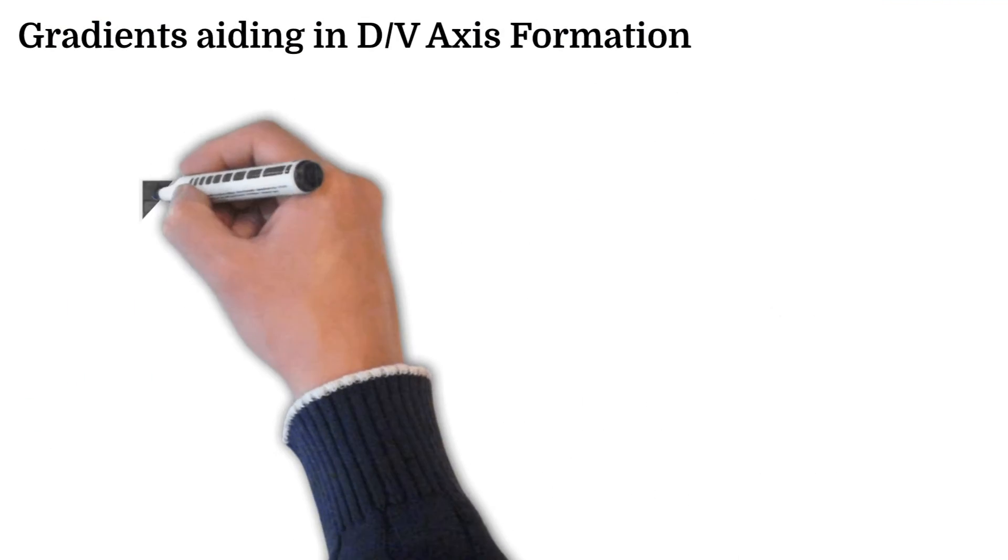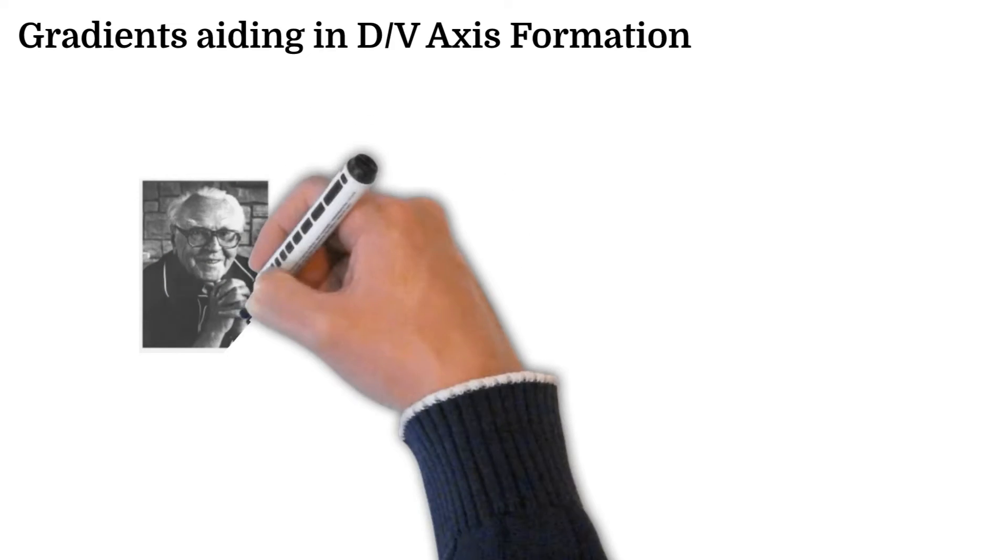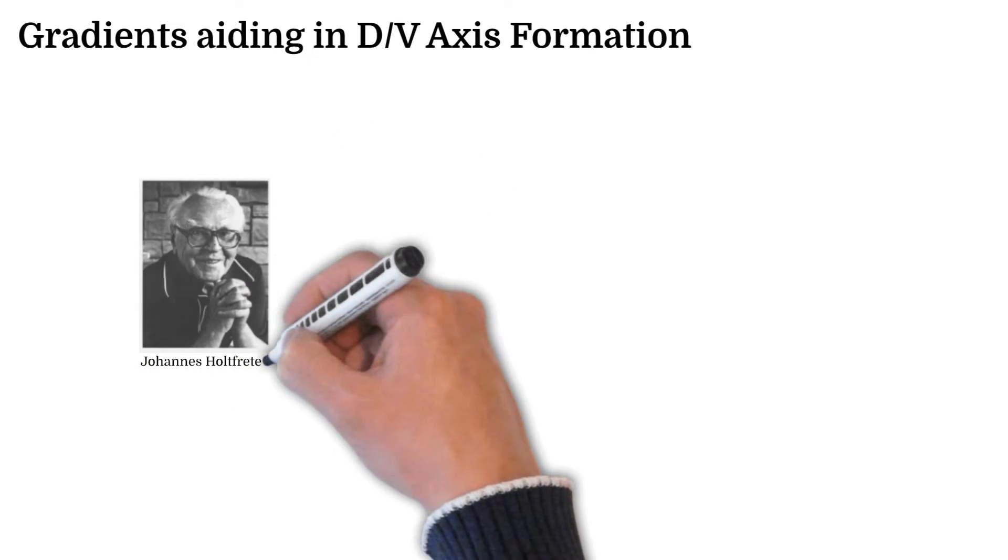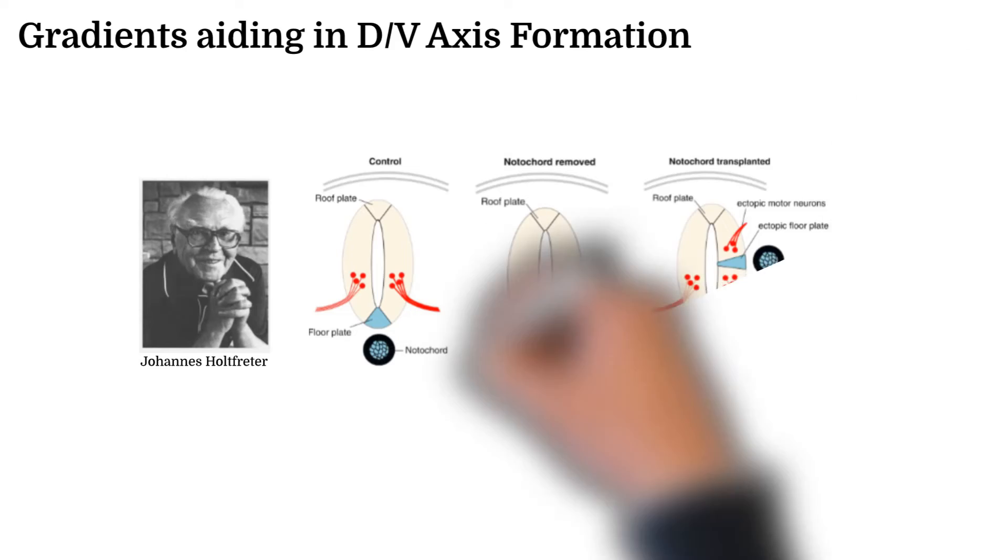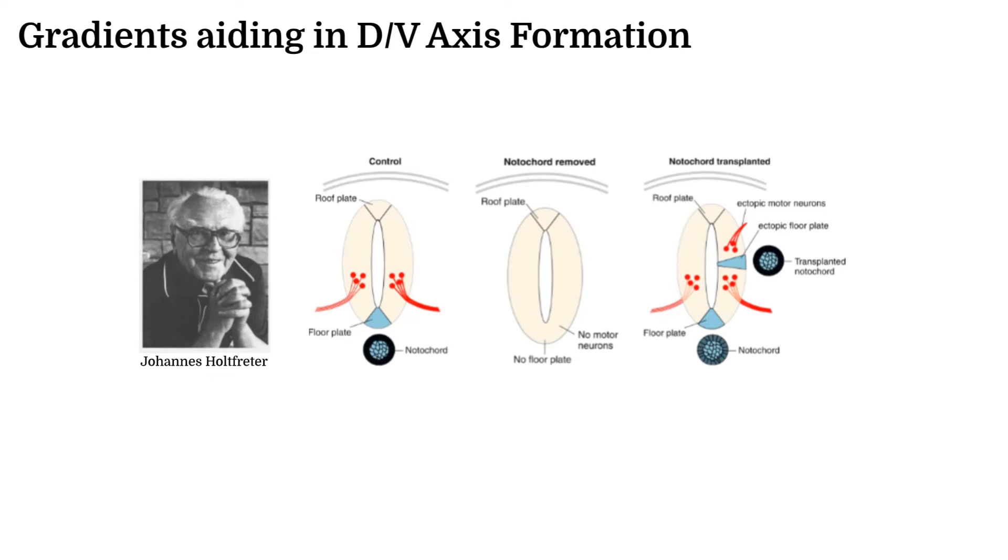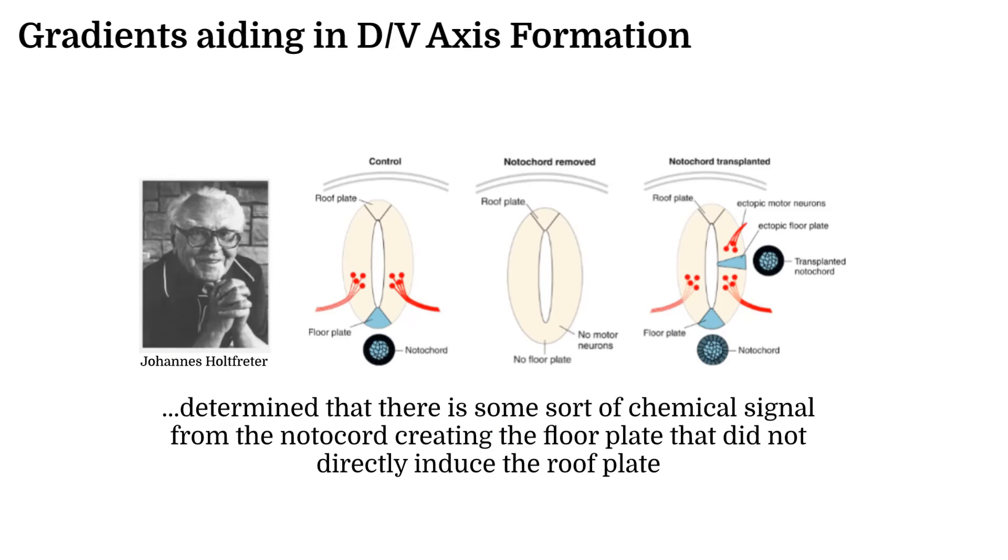Johannes Holtfreter in the 1930s sought to understand exactly how the dorsalization of the neural tube occurred. He conducted a study where he saw, upon removing the notochord, the lack of formation of the floor plate. Then, when he added a second notochord somewhere else around the neural tube, a second floor plate formed. In both cases, however, neither did the roof plate not form nor did the roof plate develop in a different spot.